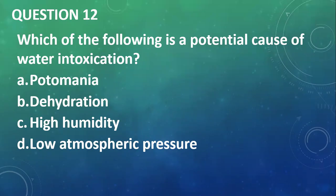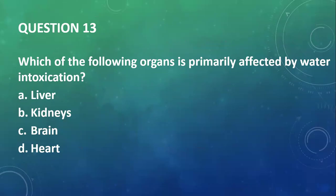Question 12: Which of the following is a potential cause of water intoxication? You have potomania, dehydration, high humidity, or low atmospheric pressure. I will go with potomania. Potomania is a situation where somebody gulps a lot of alcohol, presumably beer—some people can sit there and take crates of beer at a go in one sitting. That is referred to as potomania, so I guess this is craziness that is attached to drinking.